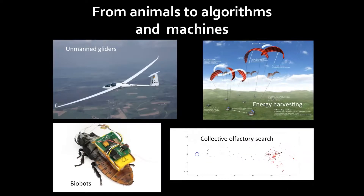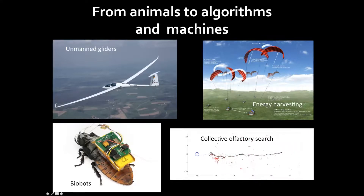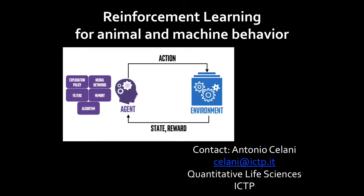So why is this connected to machine learning? Well, because we can take inspiration from animal behavior and use it for deploying algorithms that are able to autopilot gliders, to harvest energy by kites, or to equip insect cyborgs, or to develop strategies for collective olfactory search. The common language for all of these systems is reinforcement learning, which is a mathematical description of behavior and can be applied to animal and to machine behavior, to individual and to collective behavior.